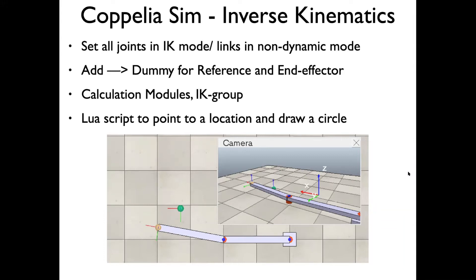I'm going to show you how to do inverse kinematics with CoppeliaSim. We'll do a two-link manipulator, which you've seen in the lectures. What needs to be done essentially is you need to set the links and the joints in IK mode, which I'll show you, and then we'll use a dummy for reference and an end effector.